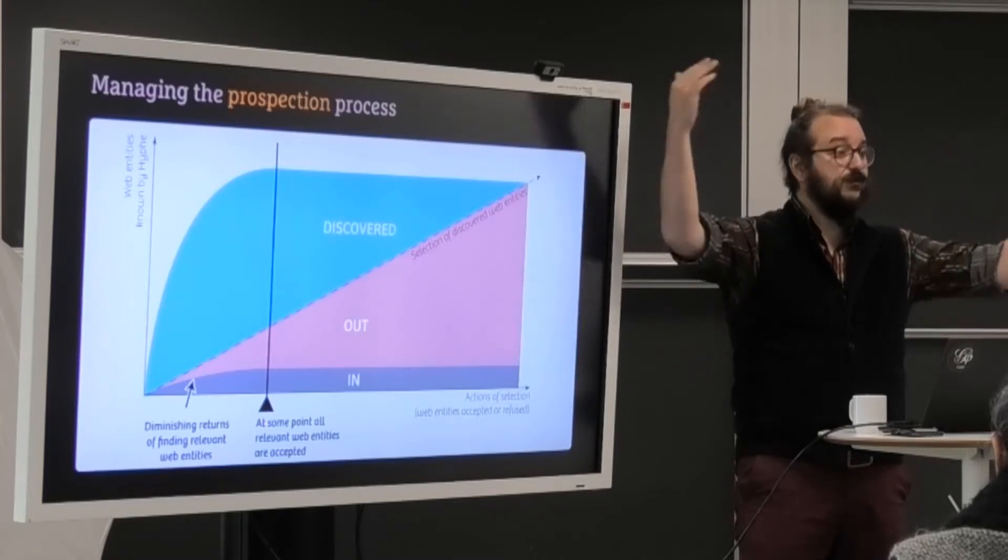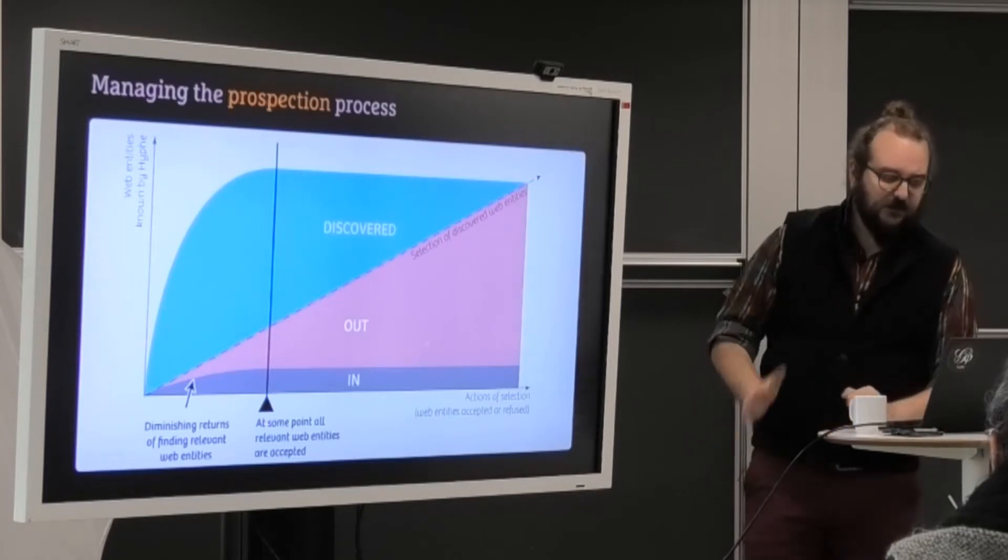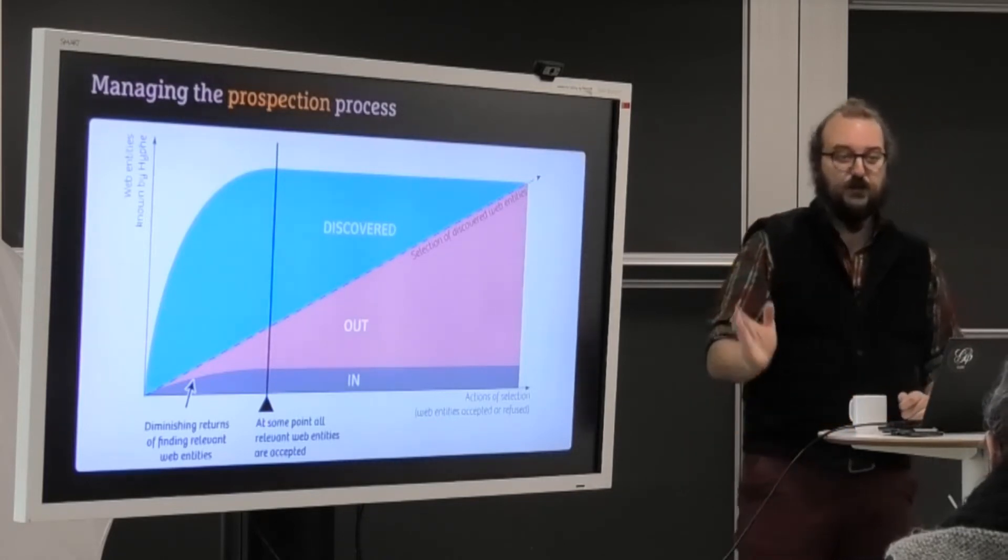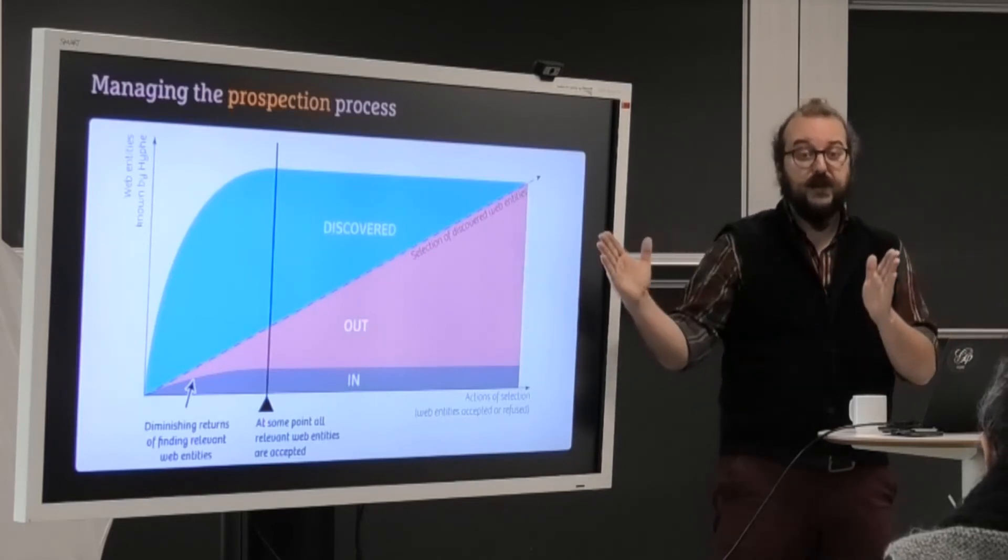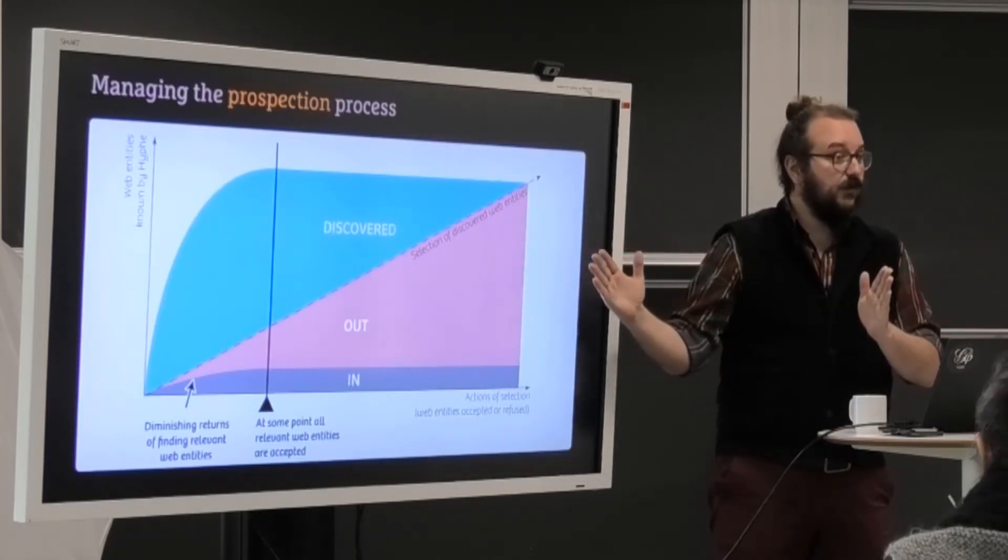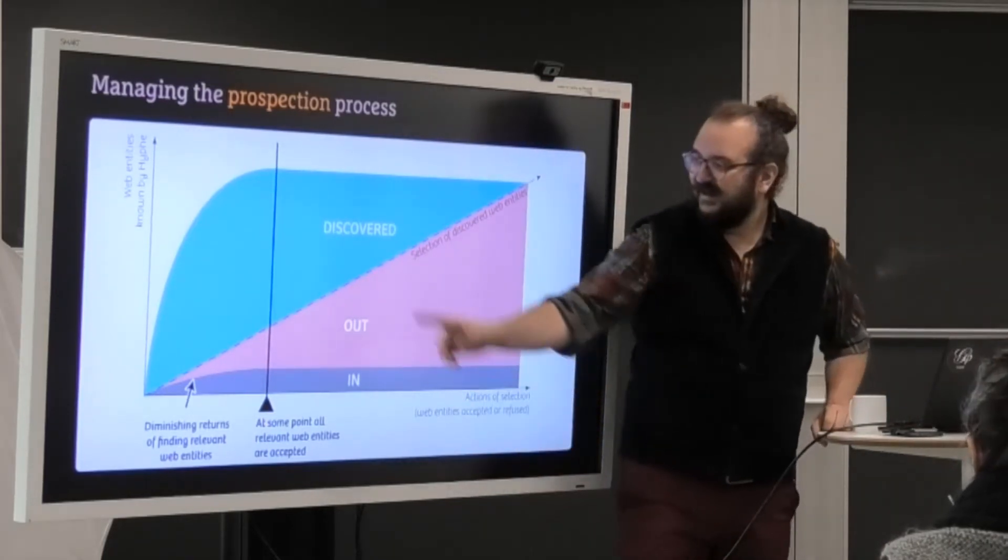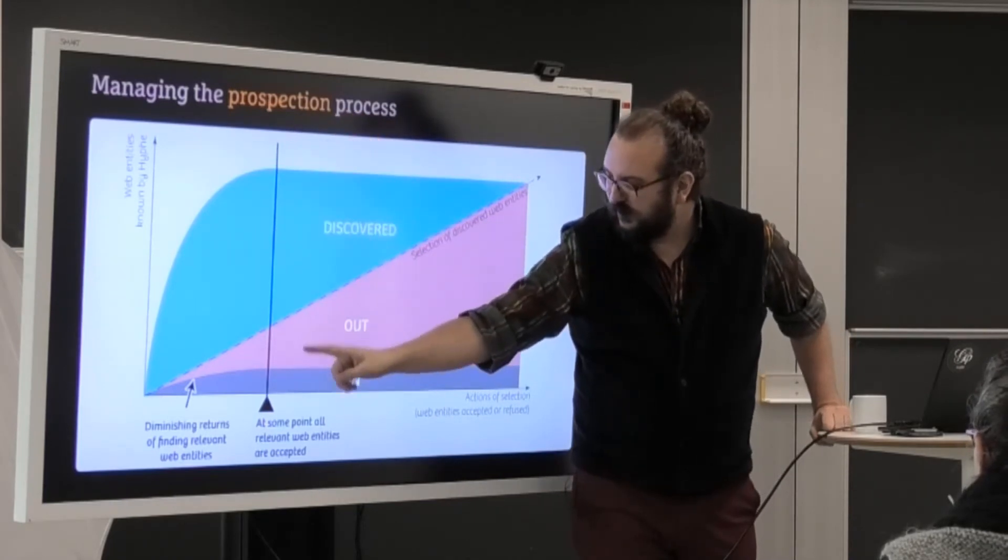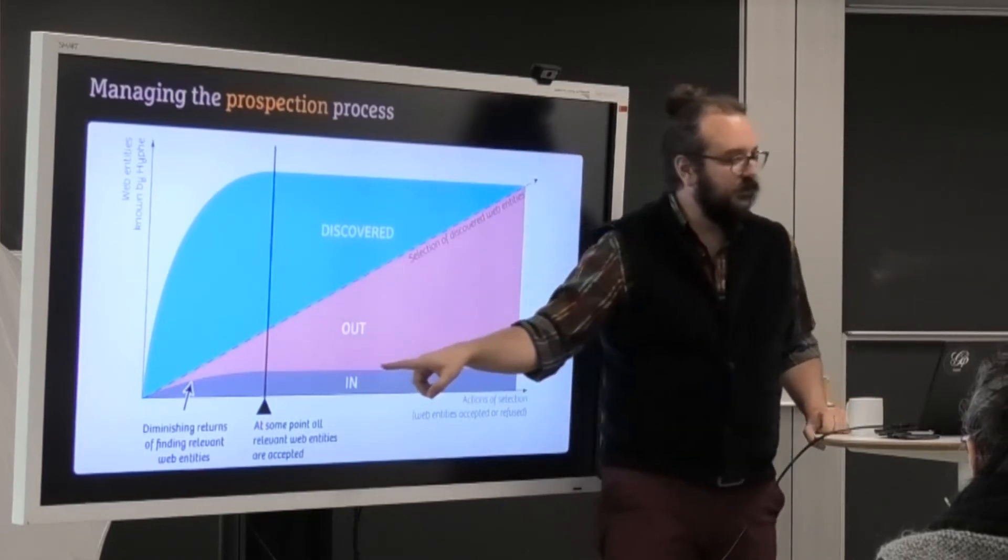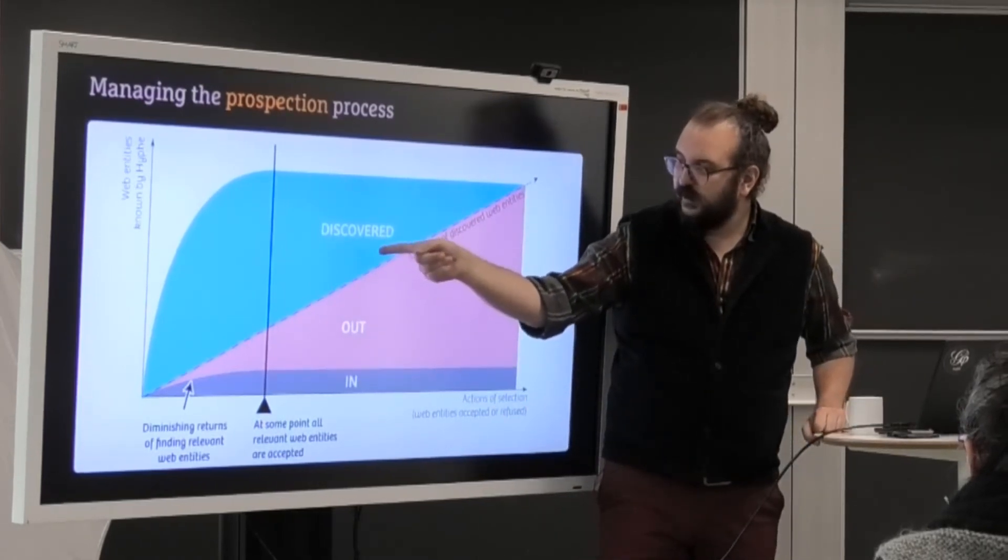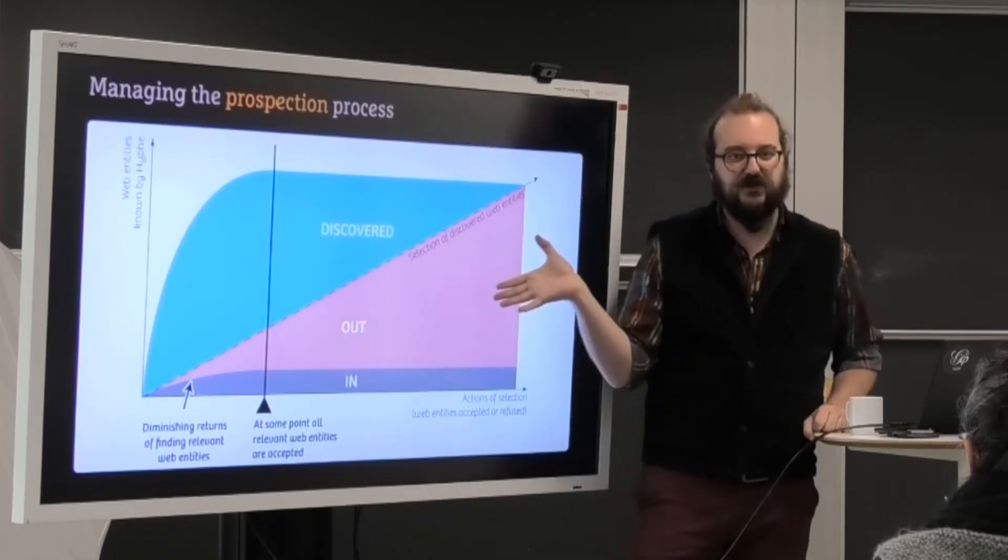The DISCOVERED are in addition to that. And the fact is, there is a moment in your corpus where you have found all the IN. All the websites that exist that match your criteria. And from that moment, you will never find a new website IN. After that moment, the IN will stay flat. You don't add any more IN. And what you're just doing is looking at a DISCOVERED and set it to OUT. And this is super unproductive. You don't want to spend that time.